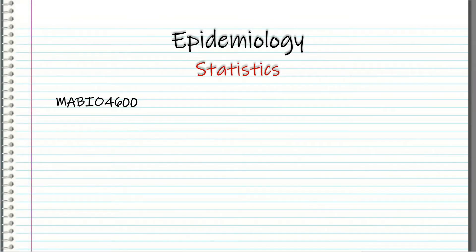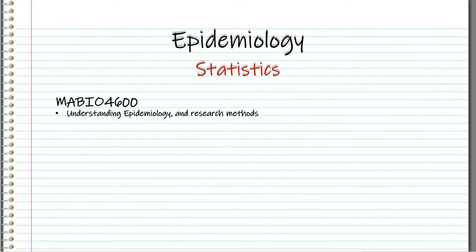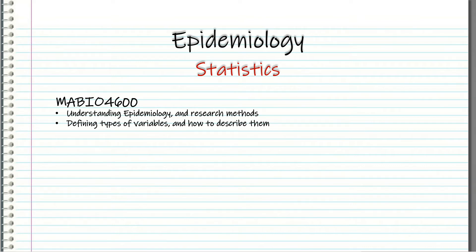Hello and welcome to the Epidemiology and Statistics for MABIO 4600. In this course we are going to work on understanding epidemiology and research methods, which is very basic in the beginning. Then we go more to defining the type of variables and how to describe them. This is the univariate analysis part of the study — if you were in MABIO 4000, you already had this information, but we go through them one more time.